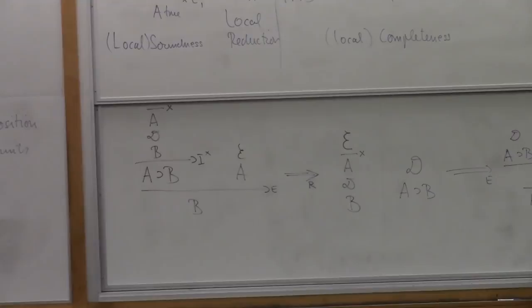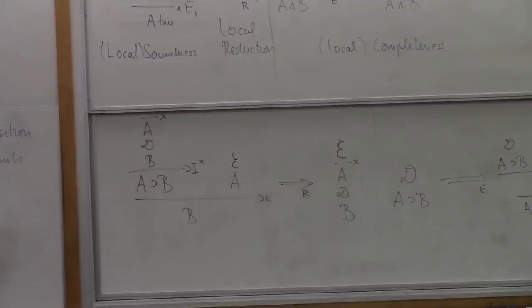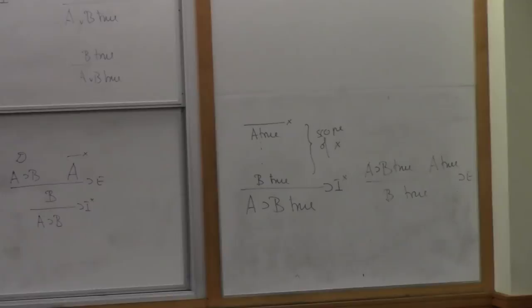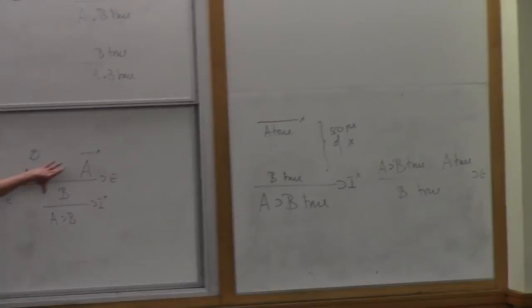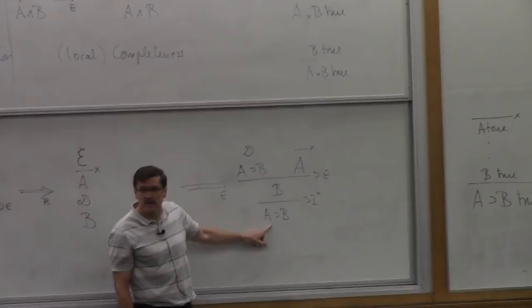The introduction rule for implication requires a hypothetical judgment at the top. The hypothesis x is labeled and scoped only to the sub-proof inside. The thing in brackets represents a hypothetical proof of B from A, which is used in the second premise of the implication elimination rule. You can view it either as a closed proof of 'A implies B' or as an open hypothetical proof, depending on what's convenient.